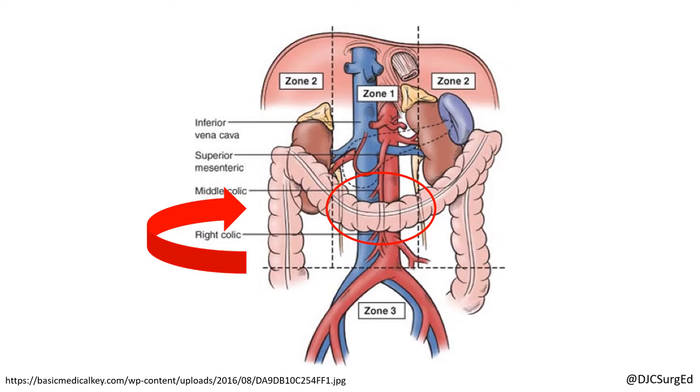The infrarenal aorta can be directly exposed at the base of the transverse colon mesentery by lifting the transverse colon cephalad.